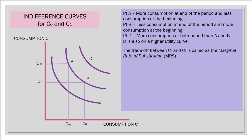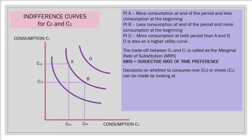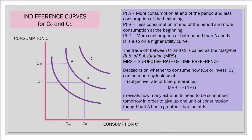The trade-off between C0 and C1 is called the marginal rate of substitution, or MRS, which is the slope of the indifference curves. MRS is also called the subjective rate of time preference. Decisions on whether to consume now or invest and consume later can be made by looking at R, the subjective rate of time preference. MRS equals minus (1 + R). R reveals how many extra units need to be consumed tomorrow in order to give up one unit of consumption today. Point A has a greater subjective rate of time preference than point B. A greater time preference means the person is willing to spend more now, while a lower time preference means they are willing to invest more for consumption later.